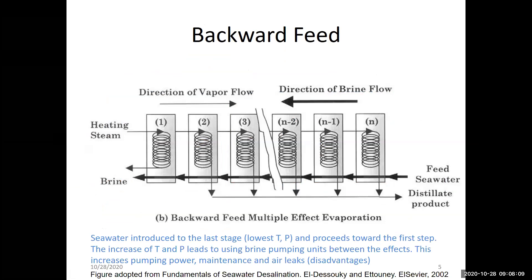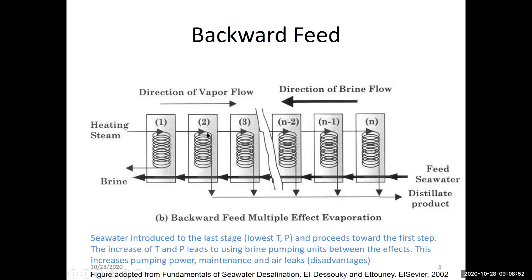The opposite is the backward feed, which means the seawater is sprayed in the last effect first. Whatever doesn't evaporate in effect N goes to effect N-1, then to N-2, and so on, until it reaches effect number one where the remainder is thrown away. The thick arrow line representing feed enters at the top and is sprayed sequentially backward through the effects.